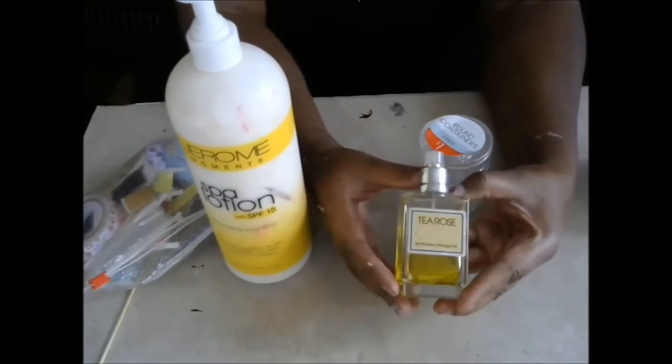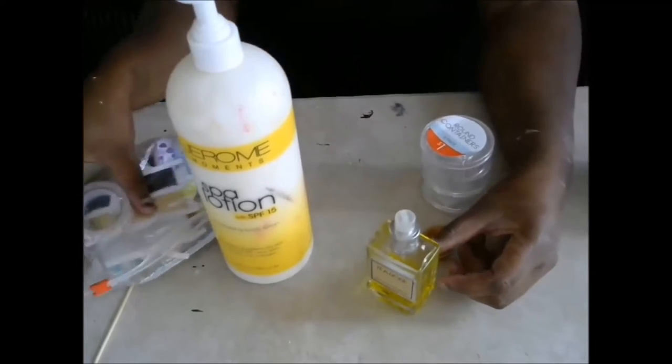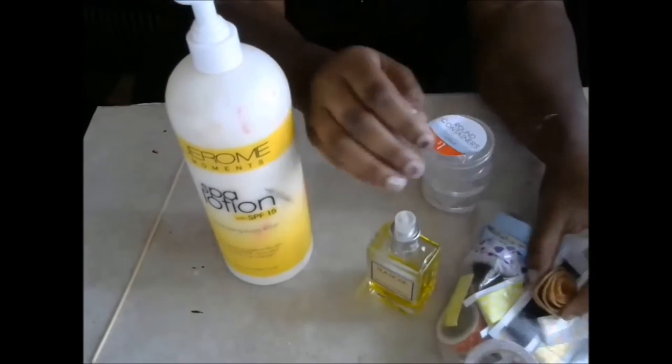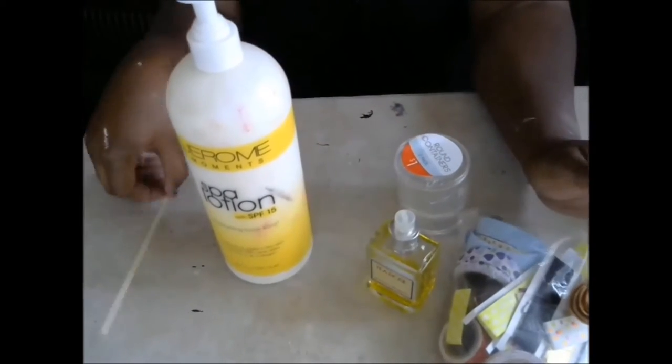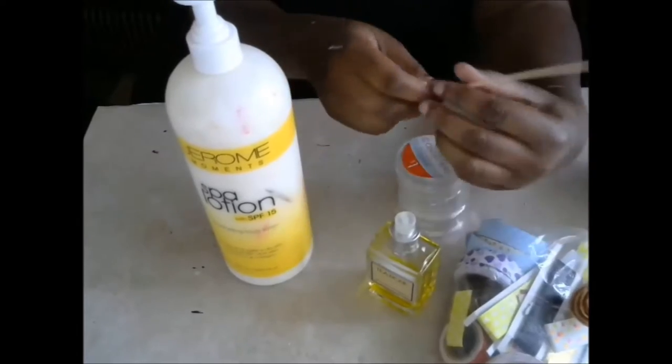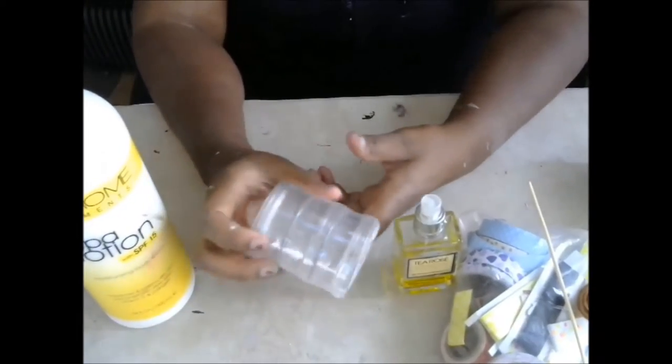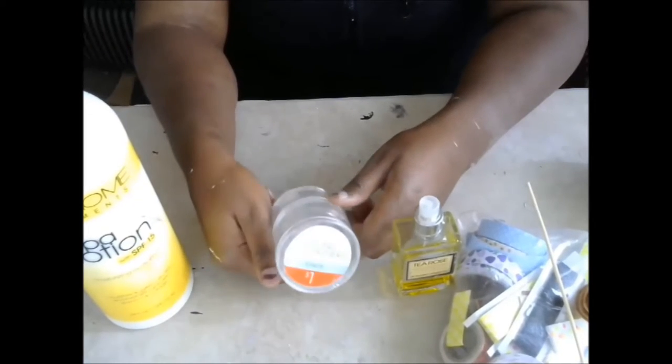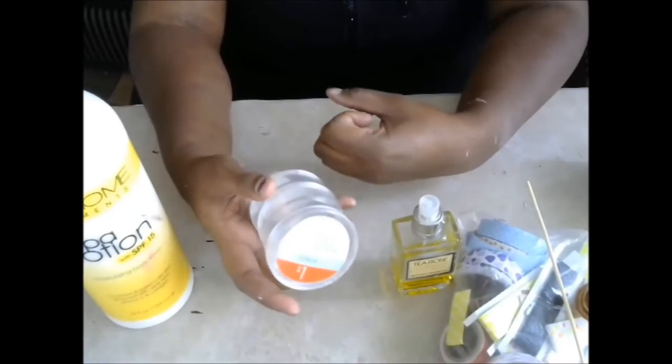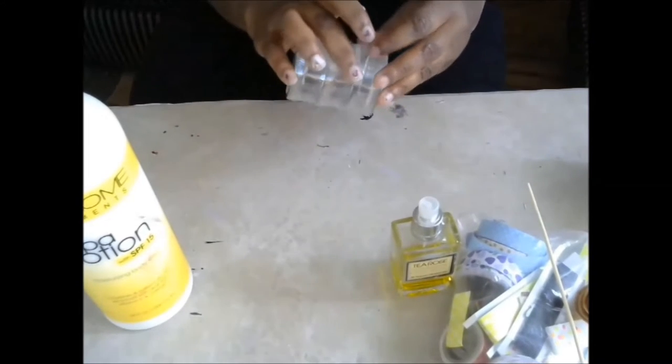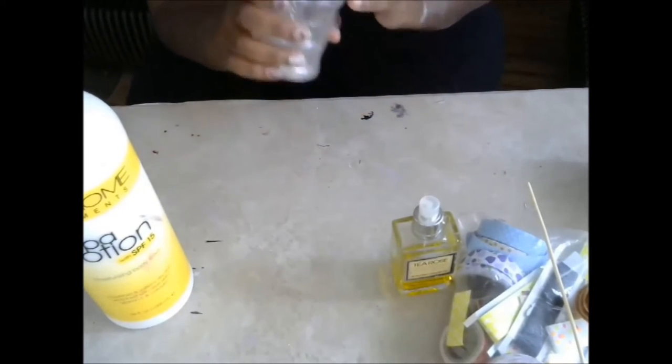But you can use the spray body sprays from Bath and Body Works. You can kind of use whatever you want. And then I also have some washi tape because we're going to cover those containers. And then I have a skewer to mix it together. I did get these containers from Target. They were like a dollar. And I just thought that I would use them for something. So I'm going to use them for this application.